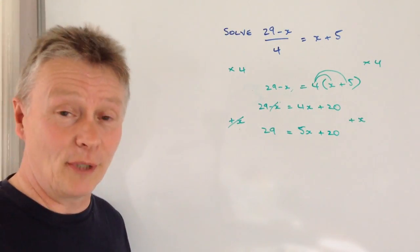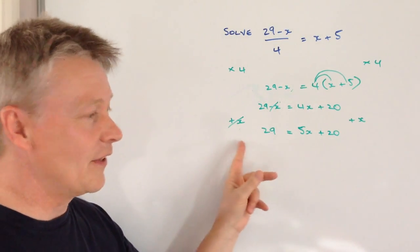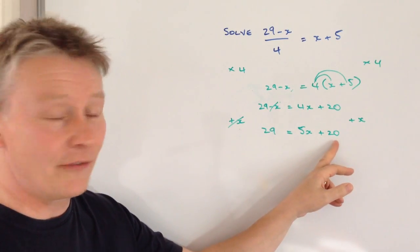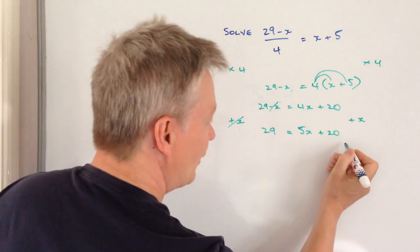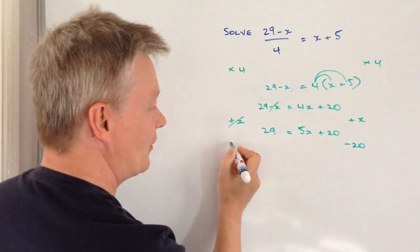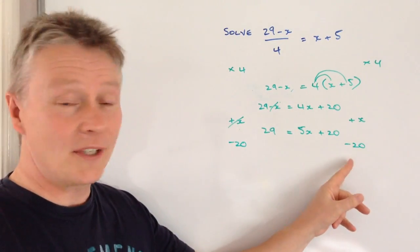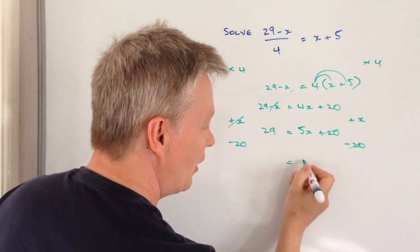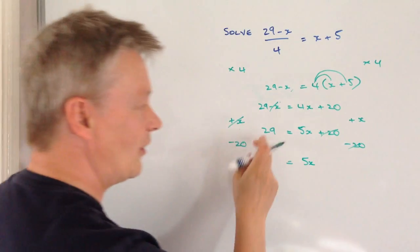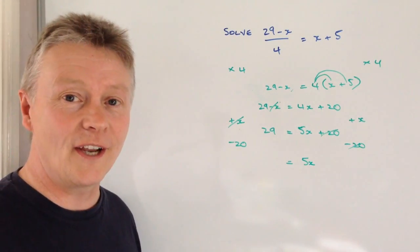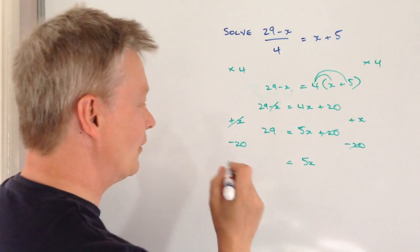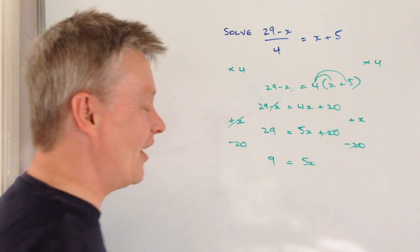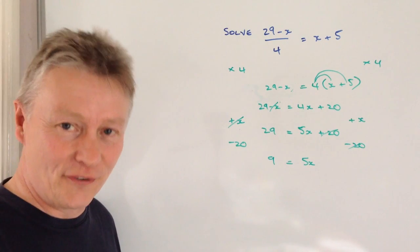We're getting a little bit closer now. I need to get that 20 over to the other side, so I'm going to minus 20 from this side. But in the interest of keeping balance, I have to do it to both sides. The plus 20 and the minus 20 disappear, and I get left with 5x on this side. On the other side I've got 29 minus 20, so that's going to be 9.